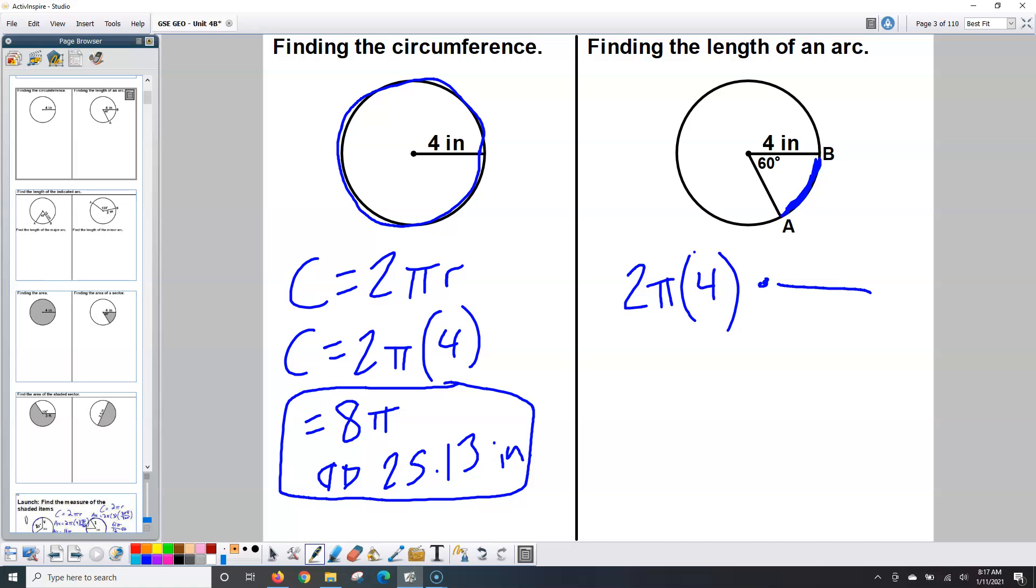How many total degrees are in a circle? 360. And how many degrees of that whole circle are we looking for? 60. So then I would take all that, punch it into my calculator, and it would give me 4π over 3. Magic arrows and it would be 4.18, and that is inches as well.